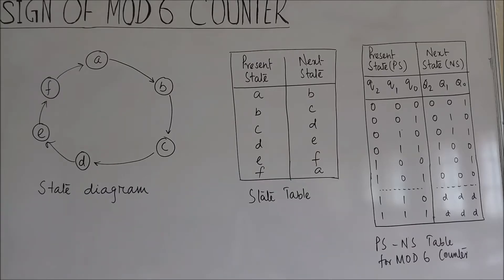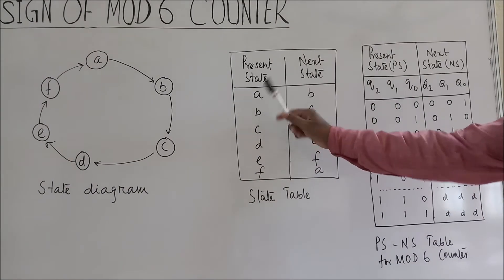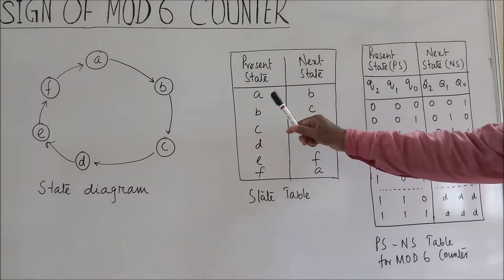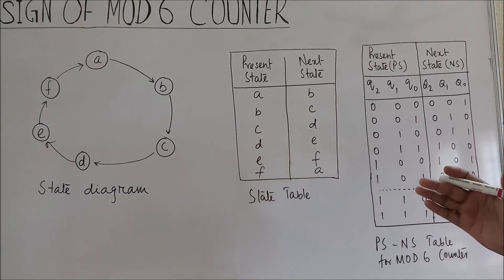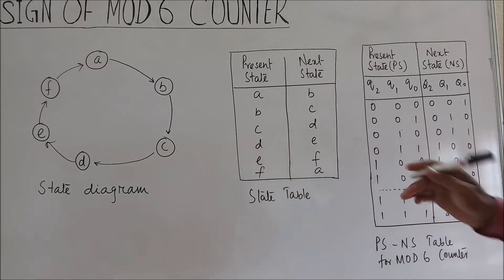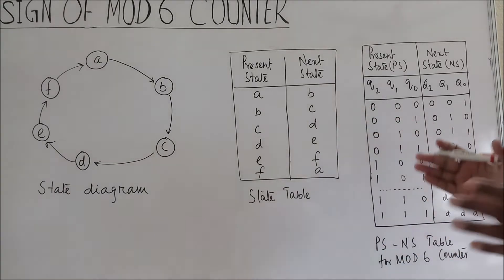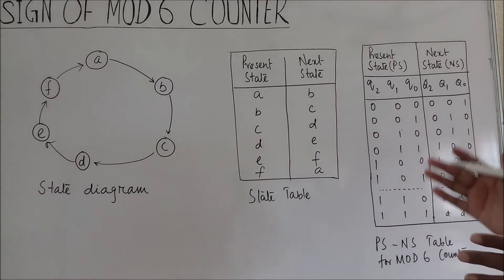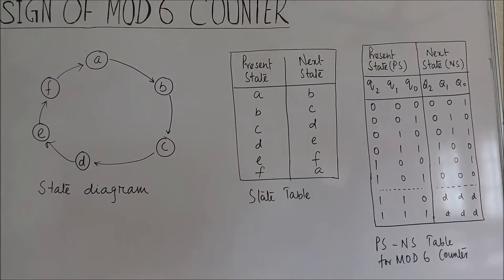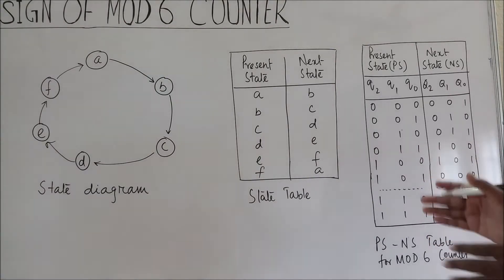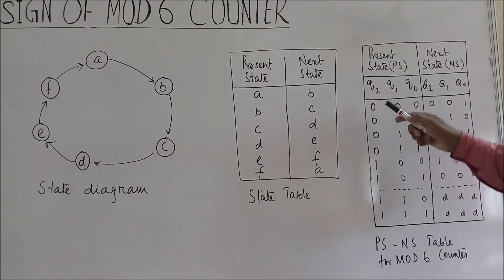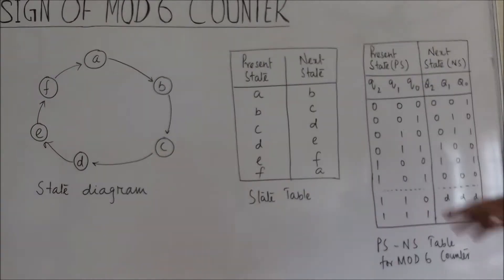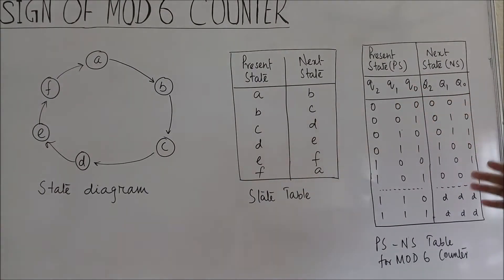Now we draw the present state and next state table for the mod 6 counter using binary values. Here present state a means 0, b means 1, and so on as the count is performed. So state a in present state is represented in binary variables as 0, 0, 0 and its next state is 0, 0, 1.